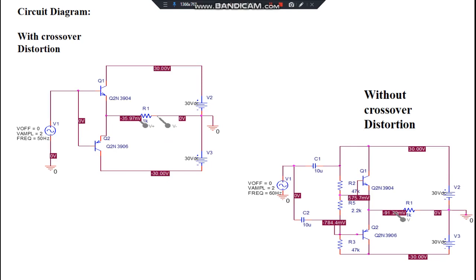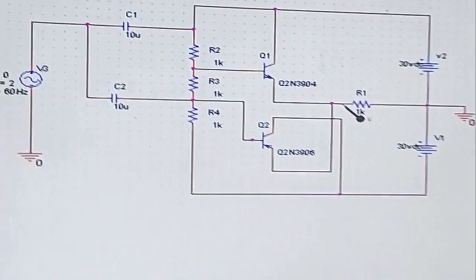Even here in the diagram, circuit diagram for without crossover distortion, you have the extra RC component which is present. In the simulation we will be seeing both these outputs. Here is a circuit diagram of a Class B push-pull amplifier without crossover distortion.